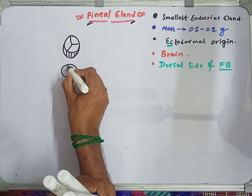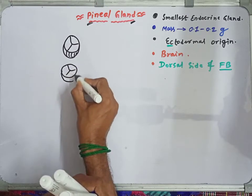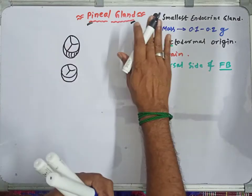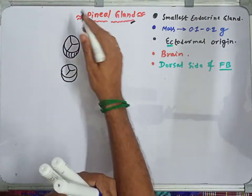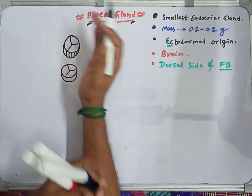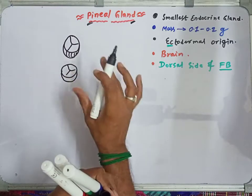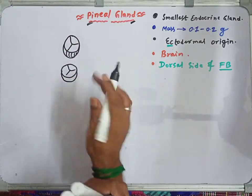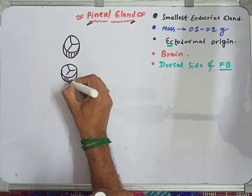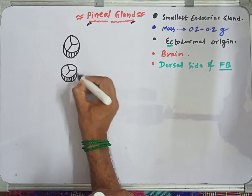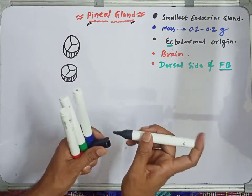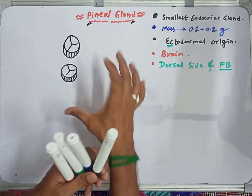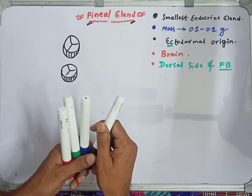This part is called the thalamus. If we cut the forebrain from the top, here is the thalamus — slightly elongated in shape. The thalamus is present in the forebrain, specifically in the diencephalon part of the forebrain.